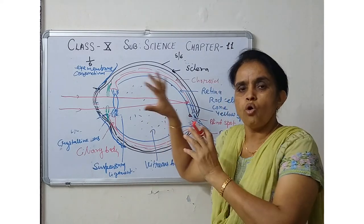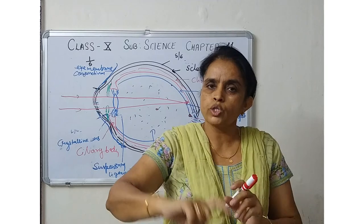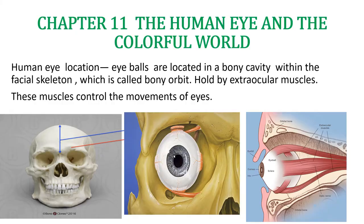Now let us revise the whole structure. Our body's skull has two cavities — we call them orbits. Our eyeballs are located in these orbits. The eyeball is like an onion. The white region is the sclera, and the colored circular region is the iris. The hole in the iris is the pupil.